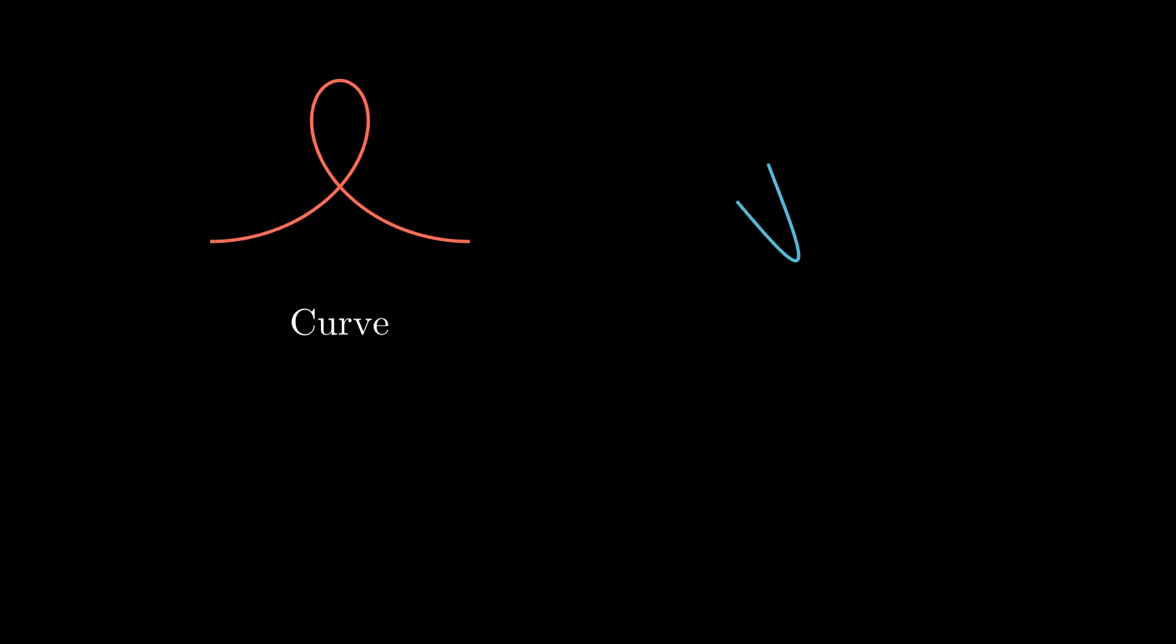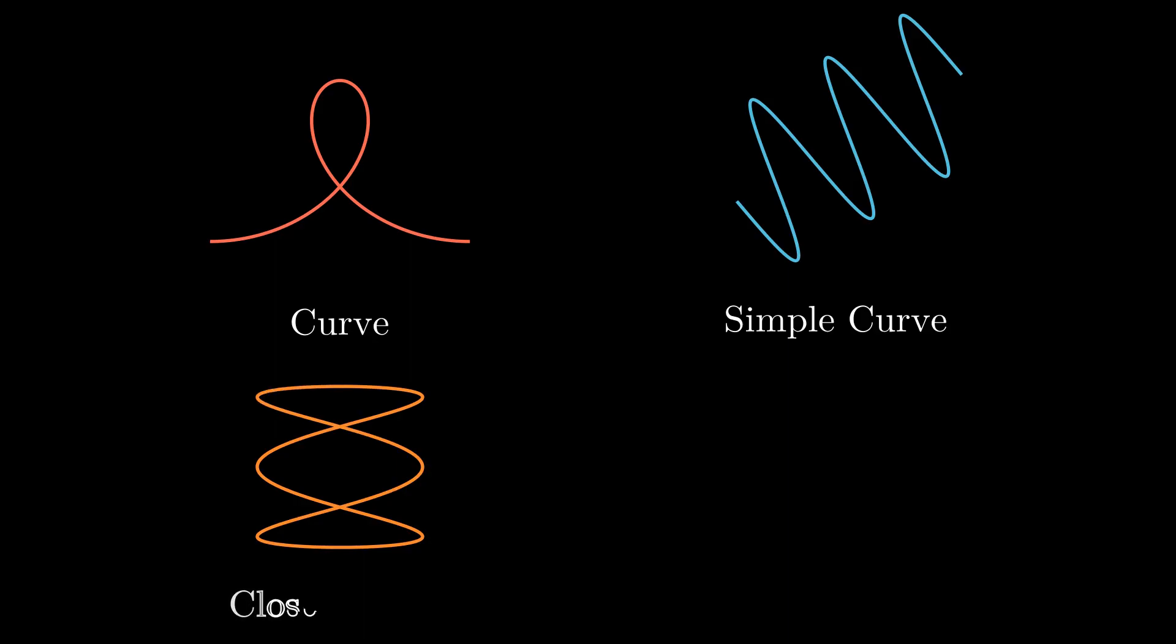Let's introduce a little more terminology. We say that a curve is simple if it does not intersect itself. This happens precisely when it has an injective parametrization. However, when we are talking about closed curves, we say that a curve is simple if it only intersects itself when it comes back to its initial point.